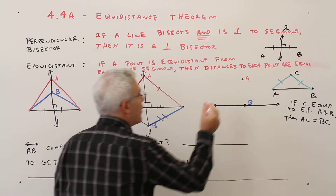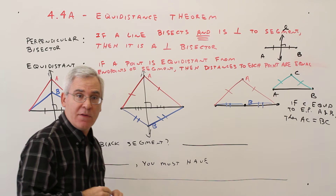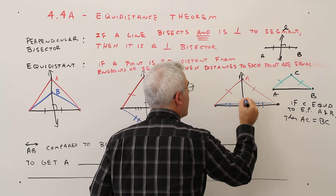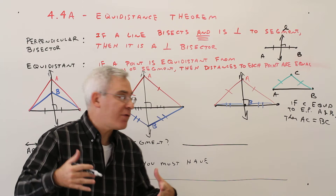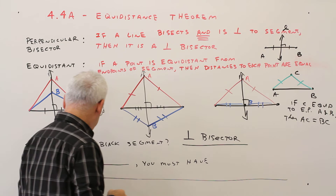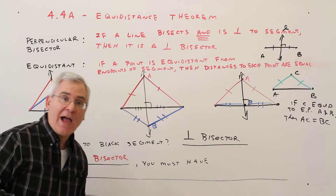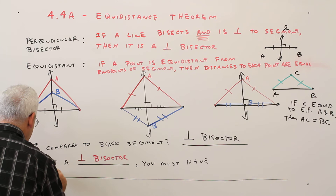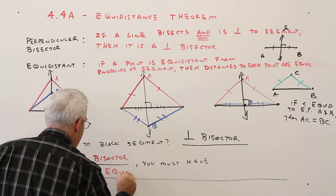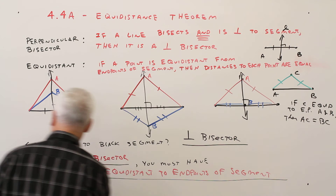We could even have a point on the segment. A is equidistant to the endpoints, B is equidistant to the endpoints. If I connect points A and B, I obtain the perpendicular bisector. The big concept here is how A and B compare to the black segment — it's the perpendicular bisector. To get a perpendicular bisector, you must have two points that are equidistant to the endpoints of the segment.